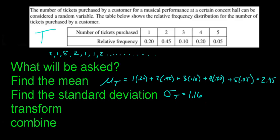What's the shape of this distribution? Certainly not normal — it's kind of weirdly shaped. It starts at 20%, increases to 45%, dips back down to 10%, goes back up to 20%, then drops to 5%. That's not normal — maybe a little bimodal, really nothing standard.